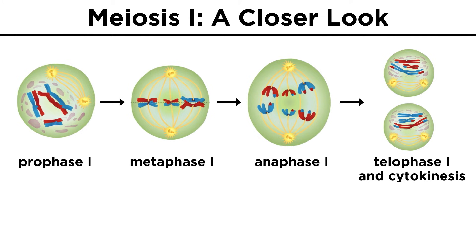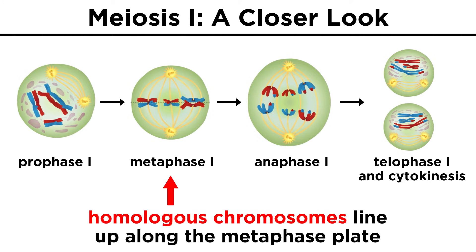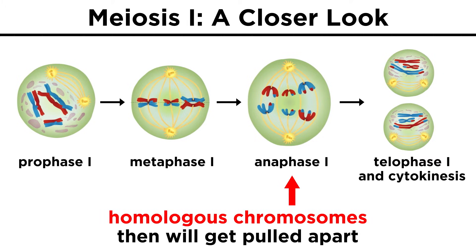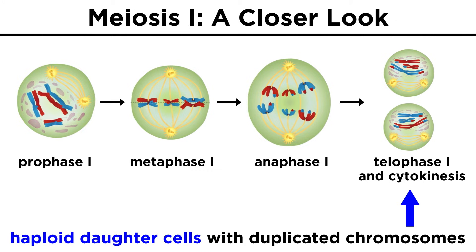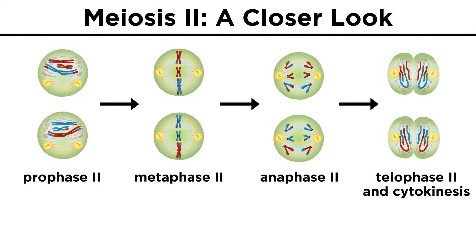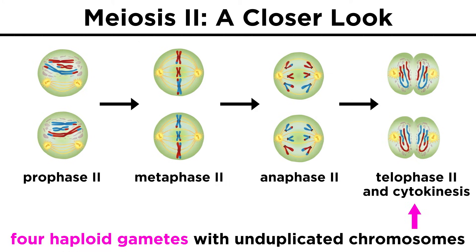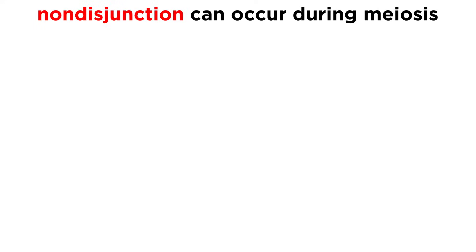Let's take another look at meiosis. We know that in meiosis I, homologous chromosomes line up along the metaphase plate and then get pulled apart, resulting in haploid daughter cells with duplicated chromosomes, that then undergo meiosis II, which is quite similar to mitosis, to give haploid gametes with unduplicated chromosomes. But in either of the two processes, something called non-disjunction can occur.